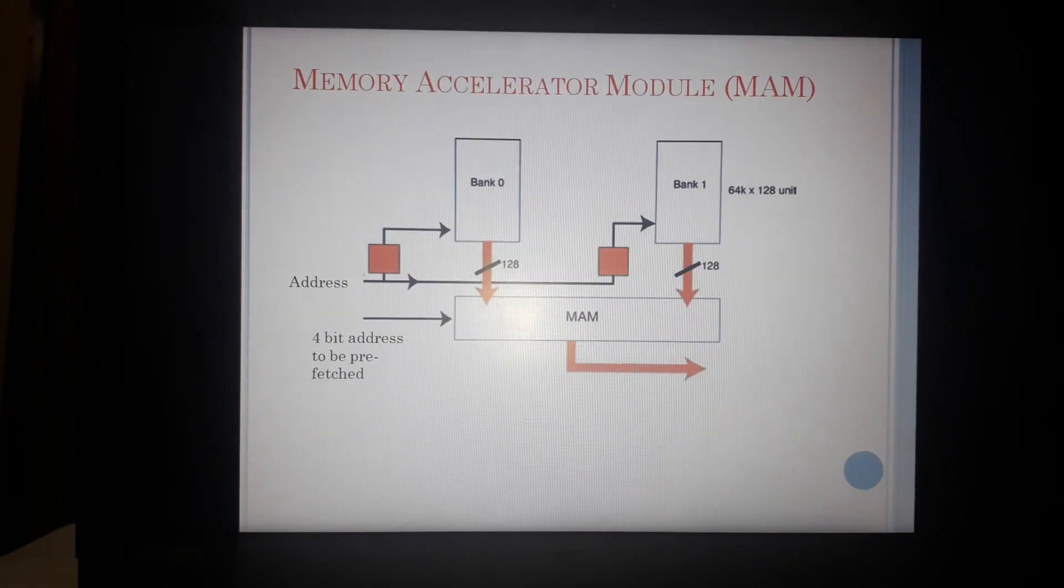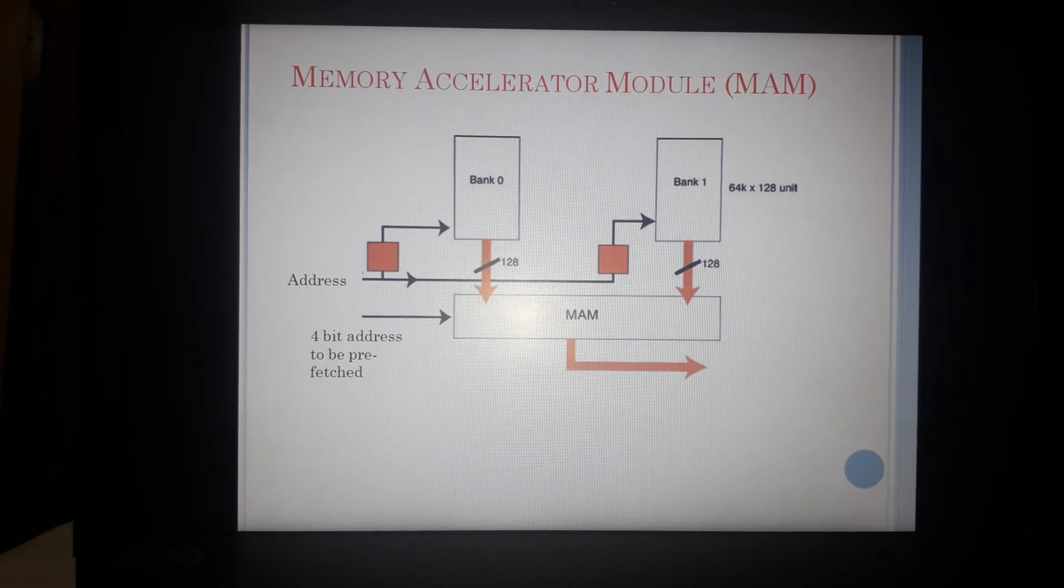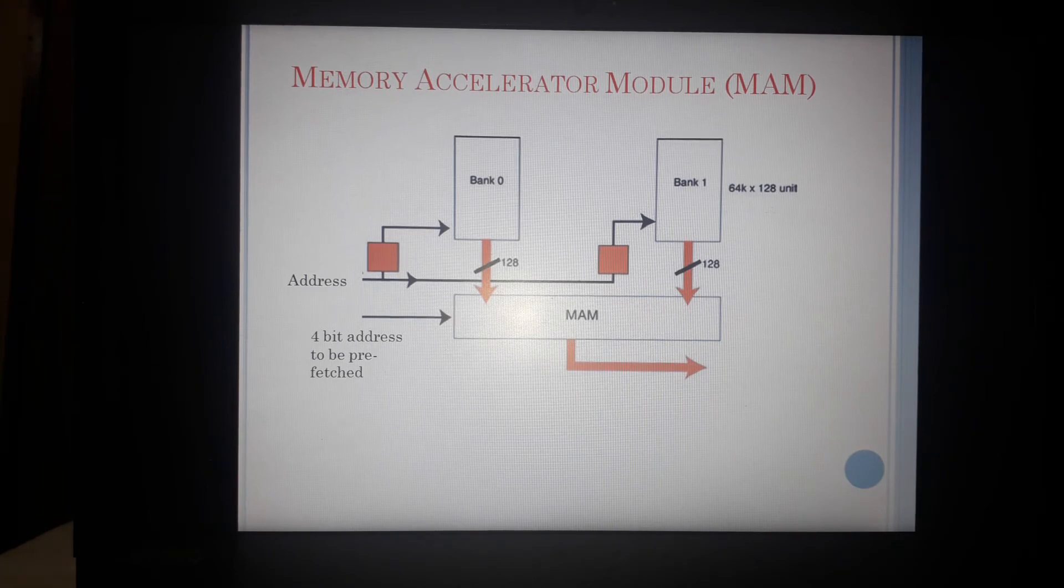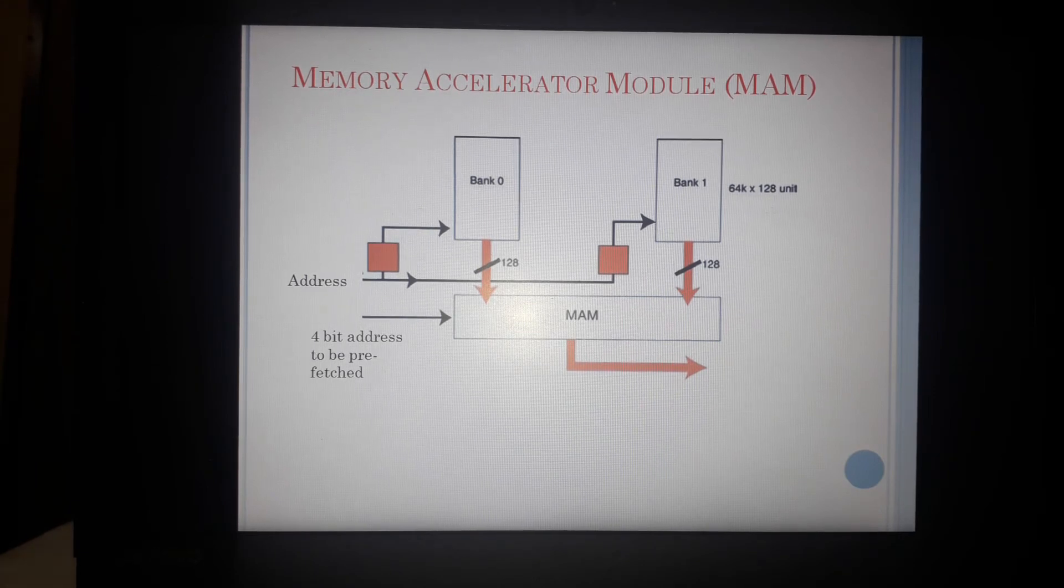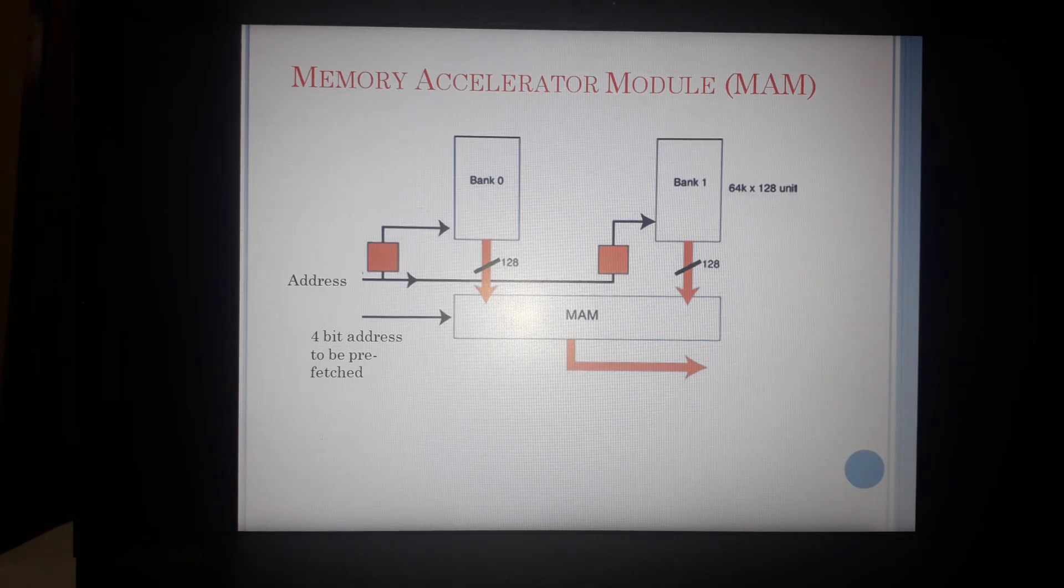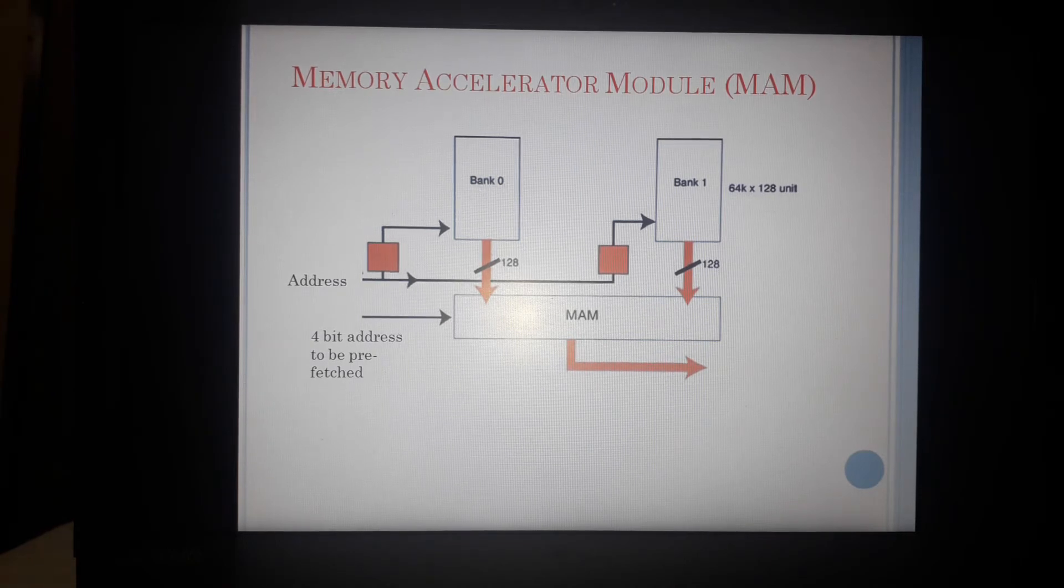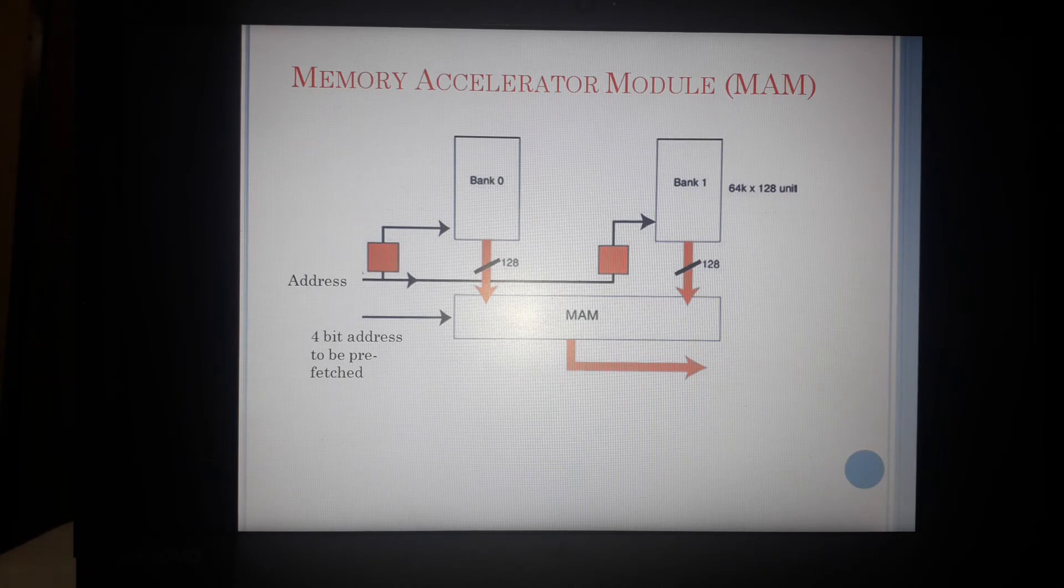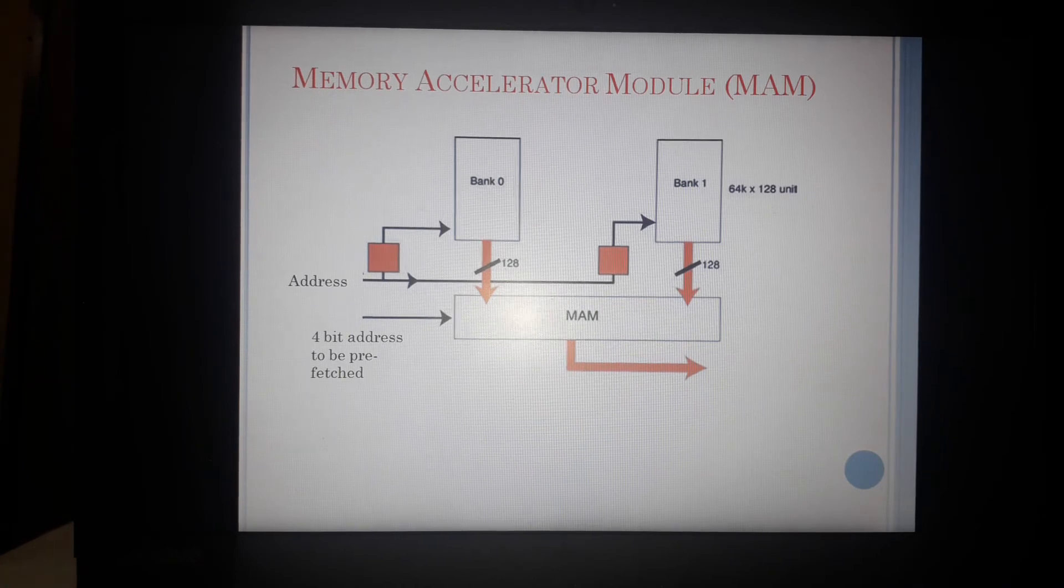So typically for our ARM7, this is the diagram. So I have two banks. So there is an address which is being loaded and accordingly they are being accessed from each this bank. And the next forward address which has to be accessed is given to the MAM which is actually communicating it to the bank where it belongs to. And memory accelerator module is then passing on the data which is fetched to the processor.